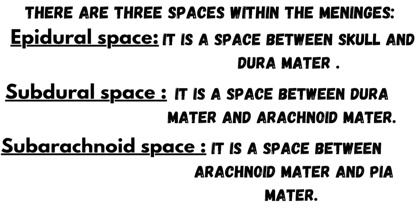The subdural space lies between the dura mater and the arachnoid mater — also a potential space, not usually visible unless something fills it. The subarachnoid space lies between the arachnoid mater and the pia mater, closest to the brain, and contains cerebrospinal fluid that cushions the brain and removes waste. These spaces are important because knowing their anatomy helps identify where bleeding or injury has occurred.